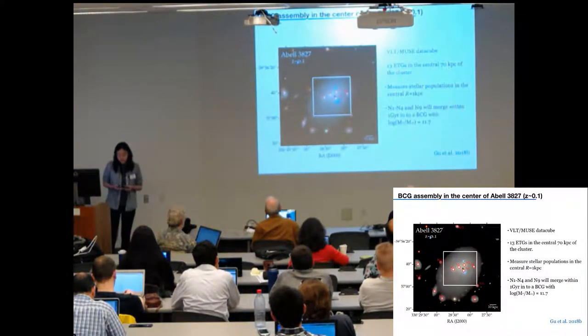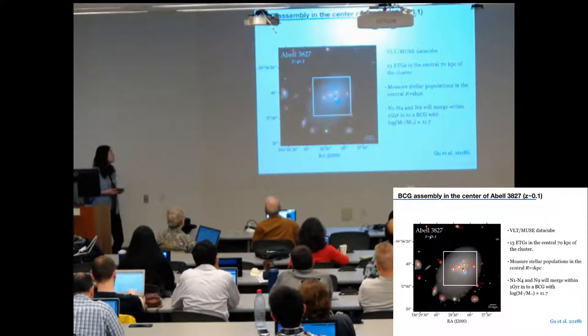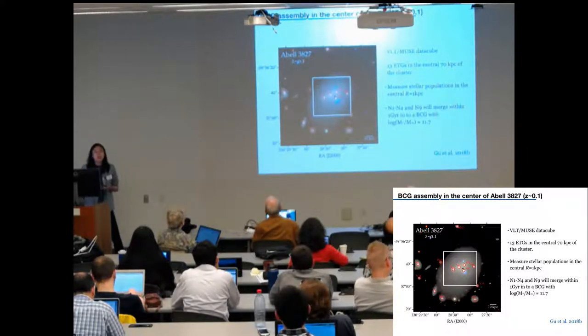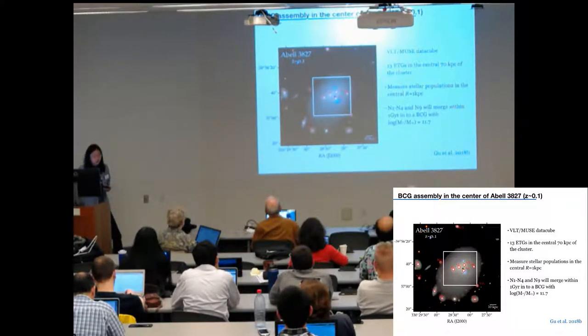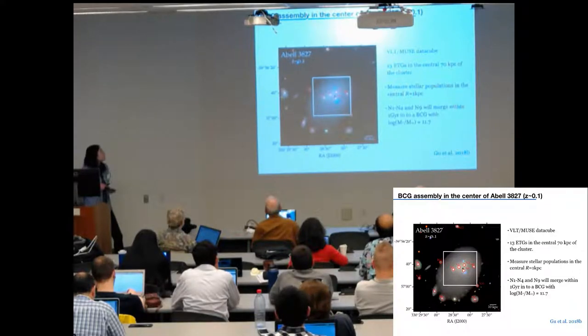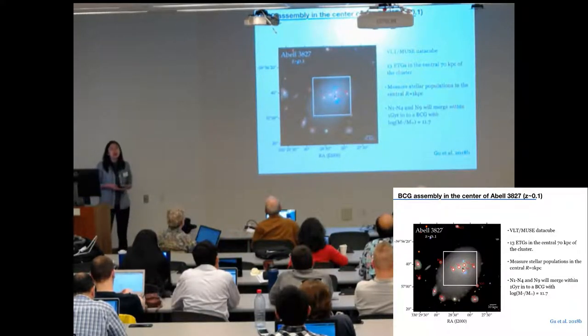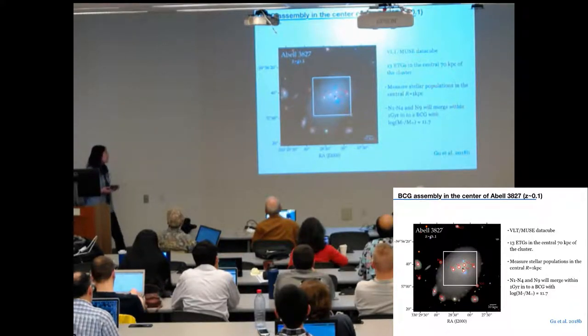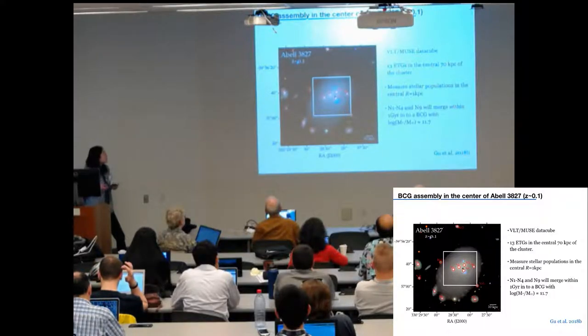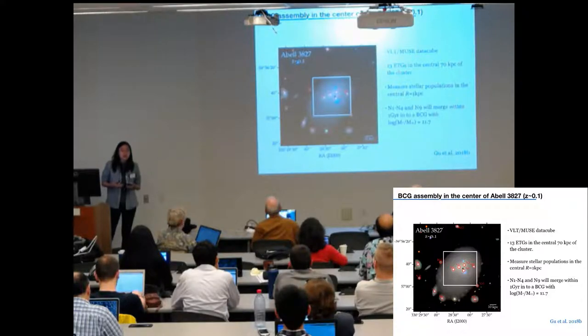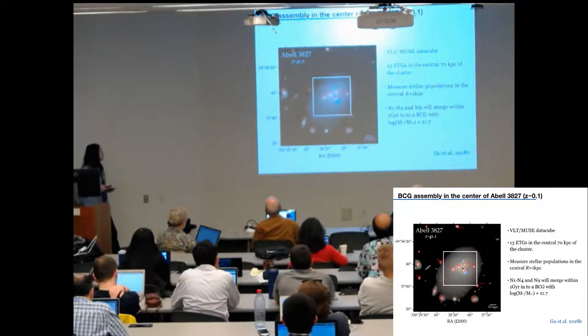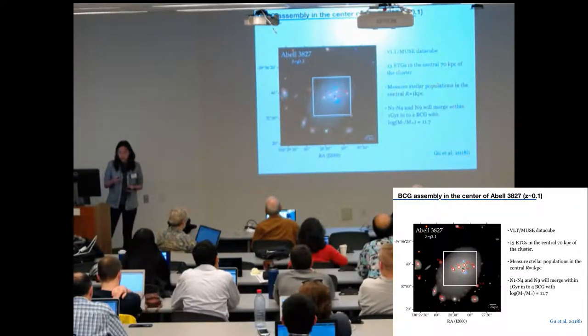This galaxy cluster has been observed by MUSE. There are 13 early type galaxies in the field of view with enough signal-to-noise ratio. And for the central five galaxies from their proximity on the sky plane and in the radial velocity space, we can estimate that they are going to merge into a massive BCG in the near future. So we have the chance to directly analyze the building blocks of a prospective BCG. And we study their stellar population within one kiloparsec.